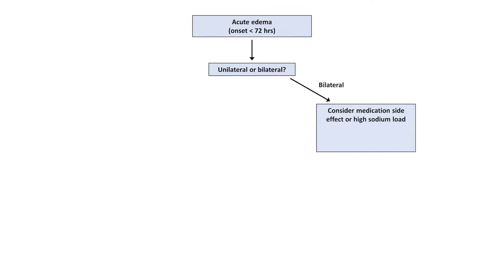I'm going to divide up the diagnostic algorithm into two parts, depending on whether or not the edema is acute. And for this specific symptom, I'm defining acute as an onset in less than 72 hours. So if the onset was acute, consider whether it's unilateral or bilateral. The acute onset of bilateral edema is most often due to a medication side effect or a high sodium load in a patient with a chronic disease like heart or kidney failure that is already predisposing them to edema. However, a bilateral DVT or a clot in the IVC is still possible.